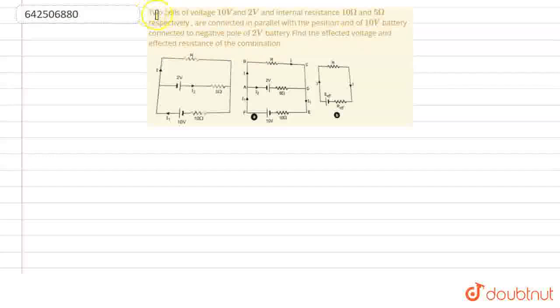So, here in this question, we have given two cells of voltage 10V and 2V and of internal resistance 10Ω and 5Ω respectively, which are connected in parallel with the positive pole of 10V battery connected to the negative pole of 2V battery.